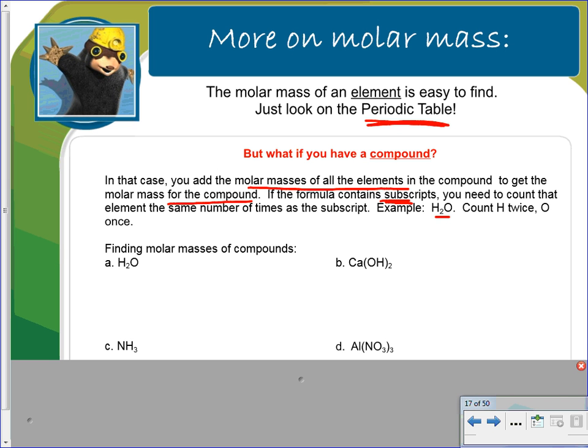So like H2O, you count the hydrogen twice and the oxygen once. So it says finding molar masses of compounds. We have water here, so this is how we would do it, and you will need to show work.